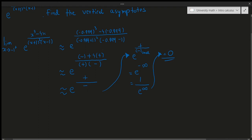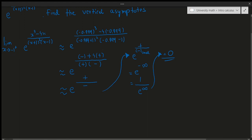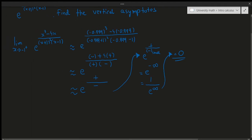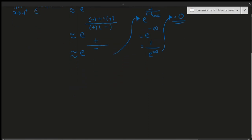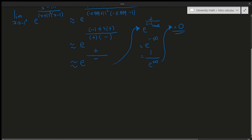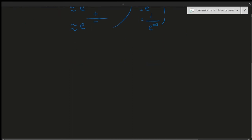If it were an asymptote, the limit would have to equal infinity, but it's zero. We also need to check from the right side of negative 1, but I'll leave that as an exercise — you'll find that limit also equals zero. I want you to practice doing these limits on your own, because finding asymptotes this way is not simple and the more you practice, the better you'll get.